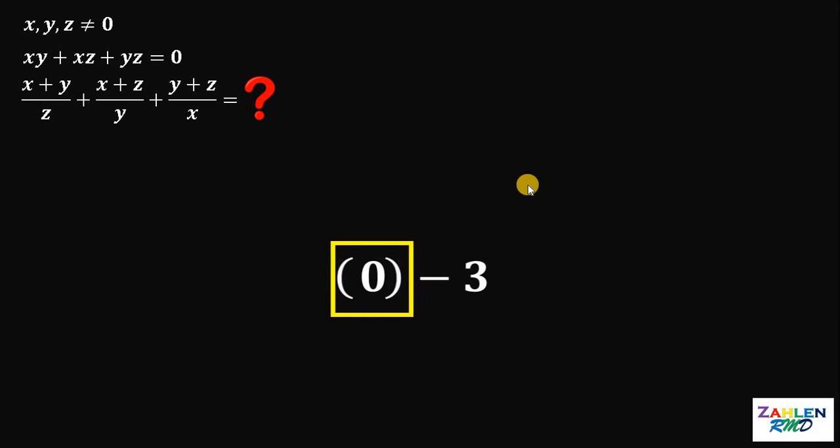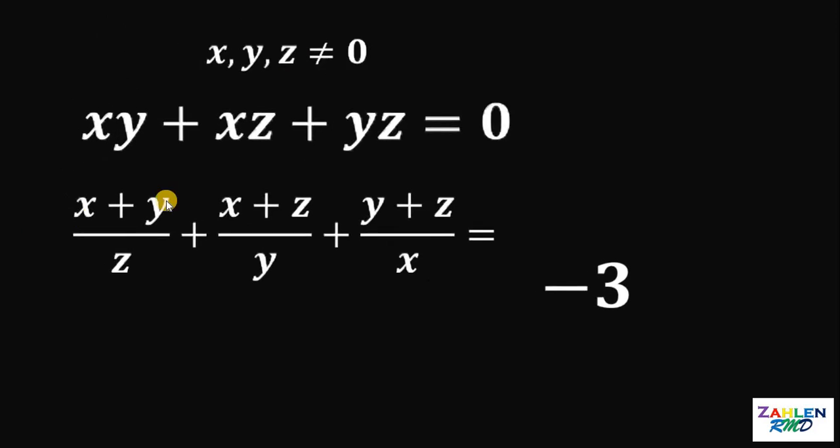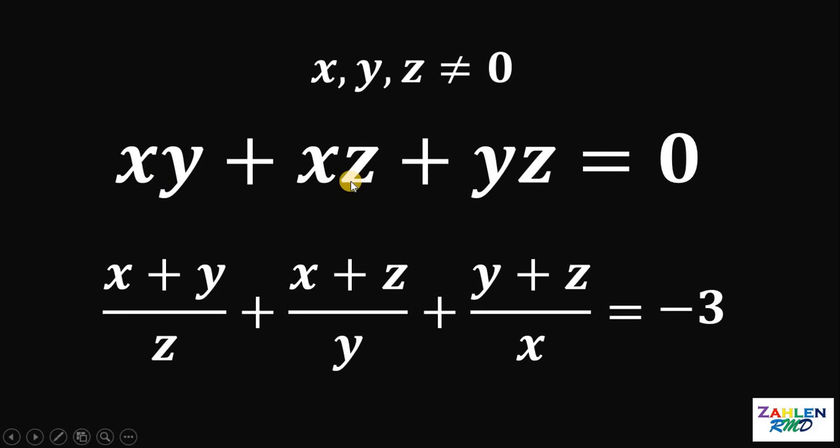Therefore, the value of this expression must be equal to negative 3. Thus, if we have xy plus xz plus yz equal to 0, then the value of x plus y over z plus x plus z over y plus y plus z over x must be negative 3.